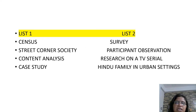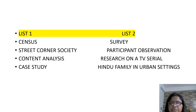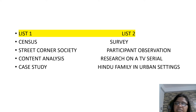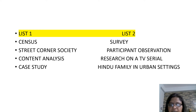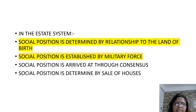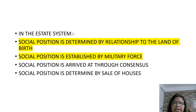The next question is on Census and research methods. Street Corner Society is the name of the participant observation study. Content analysis research is on a TV serial. The case study method is used for Hindu family in urban settings.